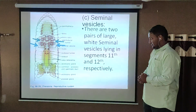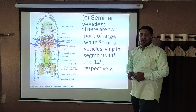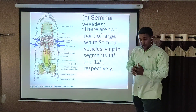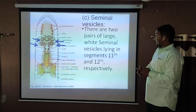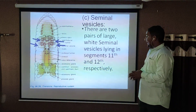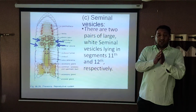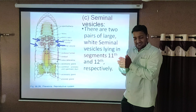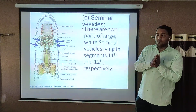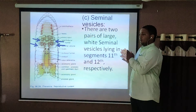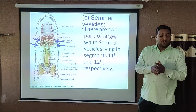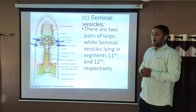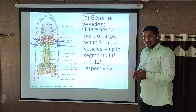Now, the seminal vesicles. The seminal vesicles are white gland-like structures present in two pairs. There are two pairs of large white seminal vesicles lying in segment number 11 and segment number 12 respectively. The testis sac of the 10th segment is connected to the seminal vesicles of the 11th segment, and the testes of segment 11 are connected to the seminal vesicles of the 12th segment.